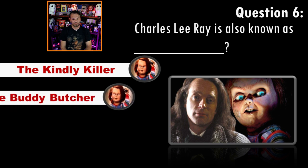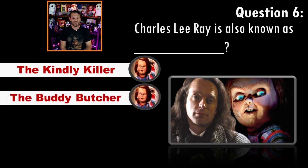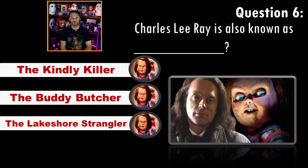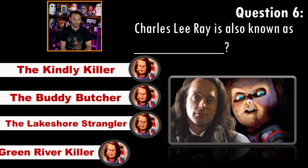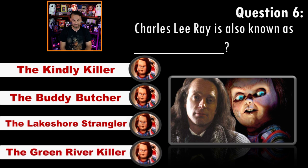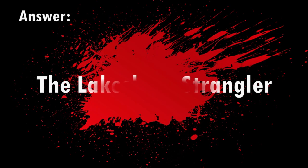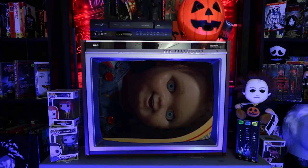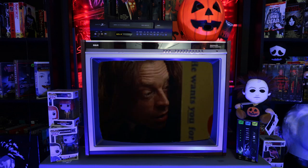Question six: Charles Lee Ray is also known as the kindly killer, the buddy butcher, the lakeshore strangler, or the green river killer? Answer: the lakeshore strangler. What would possess this doll to be so evil? That was the soul of the serial killer — and the history was that he was the lakeshore strangler.